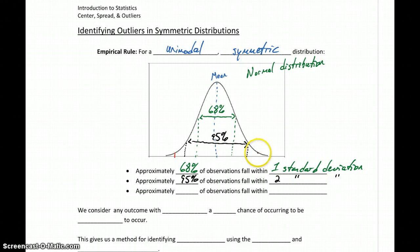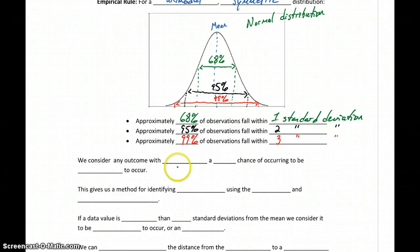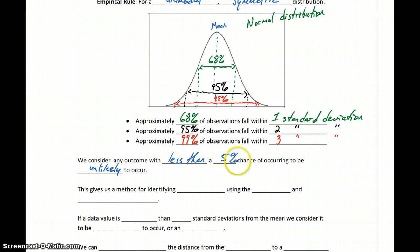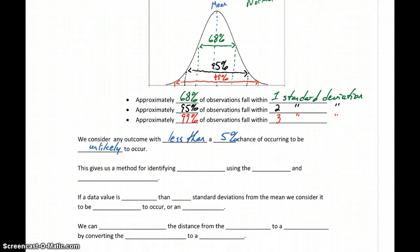If we expand out to three standard deviations, we should see approximately 99% of all observations fall within three standard deviations of the mean. We consider any outcome with less than a 5% chance of occurring to be unlikely. That's a fairly arbitrary cutoff, and in later topics we'll look at choosing different values, but the standard number is 5%. Pairing this idea with the empirical rule gives us a method for identifying outliers using the mean and standard deviation.